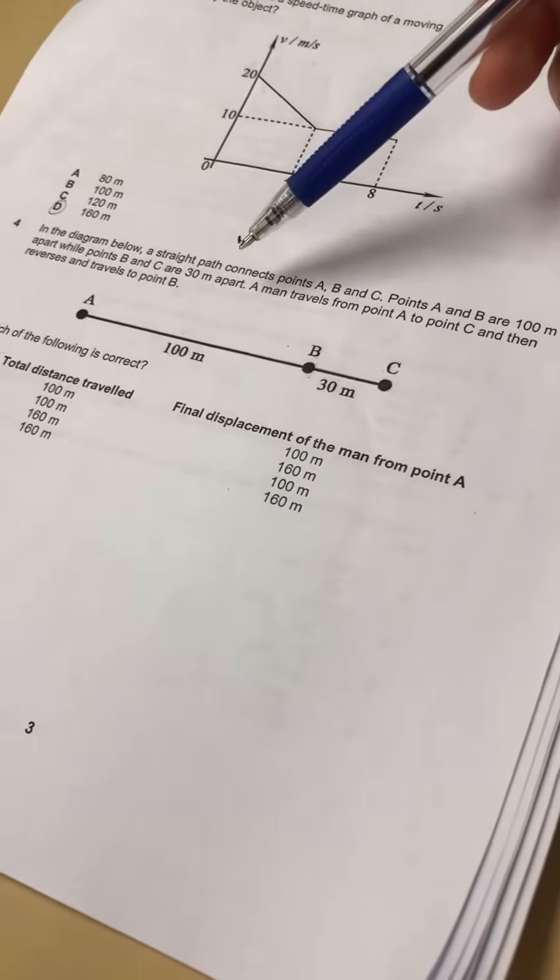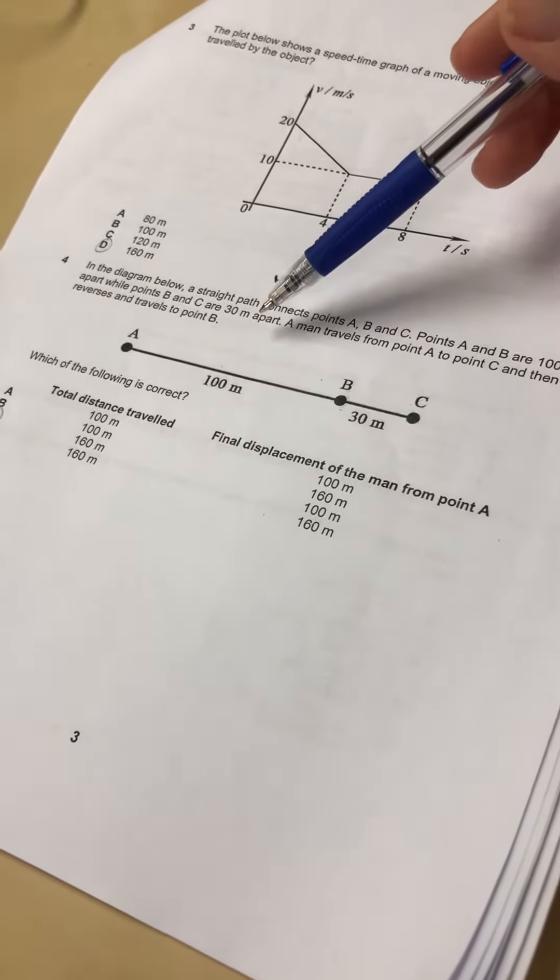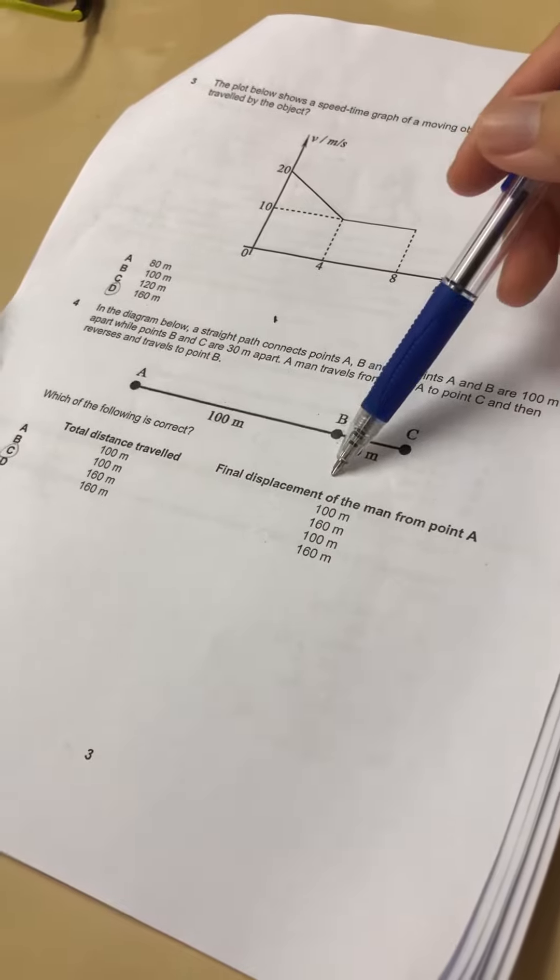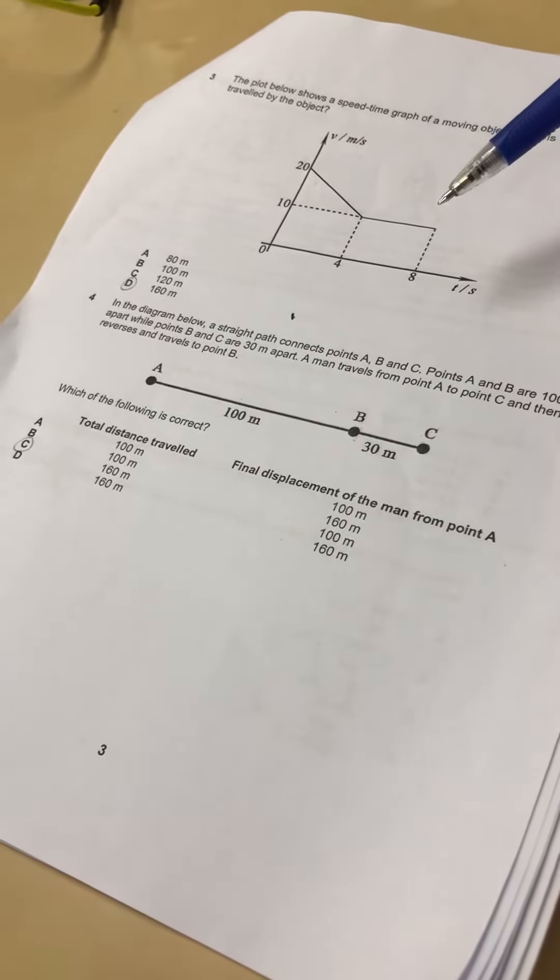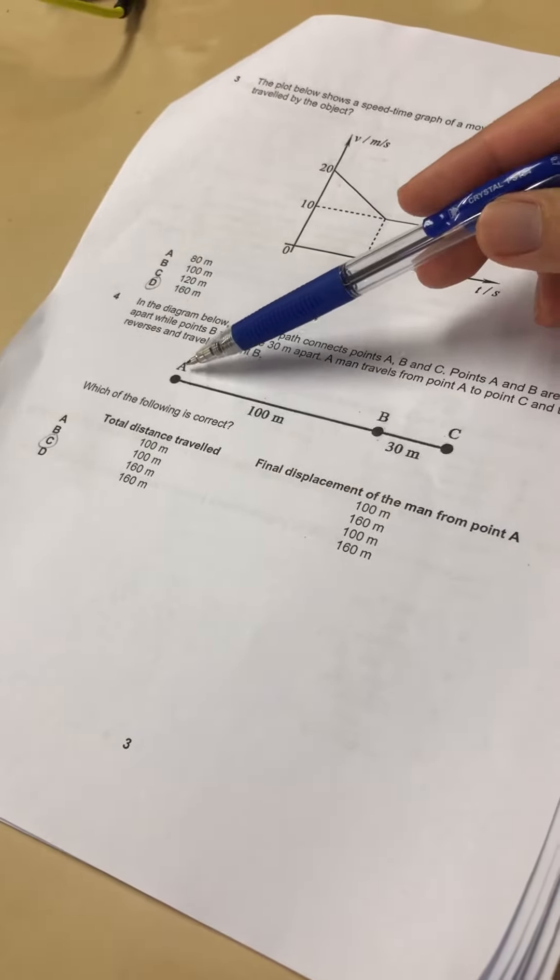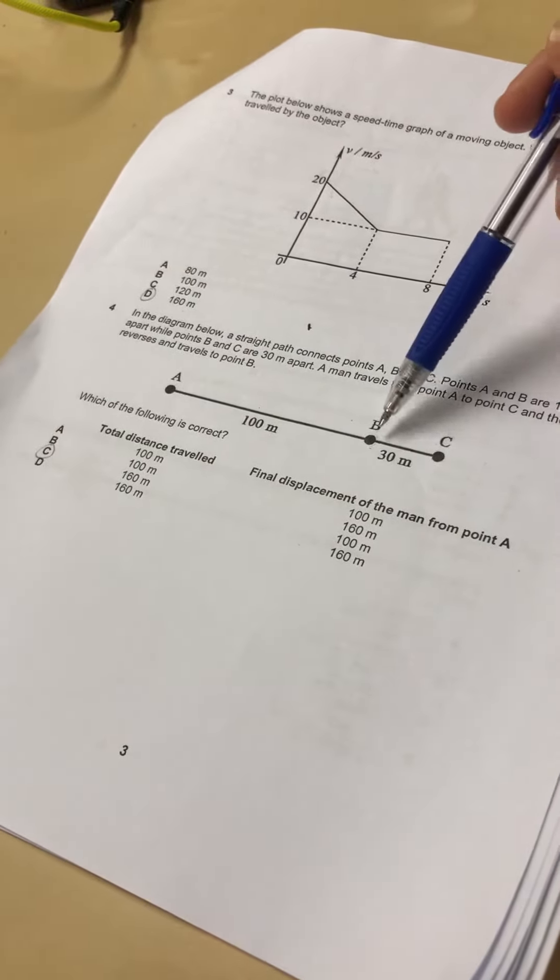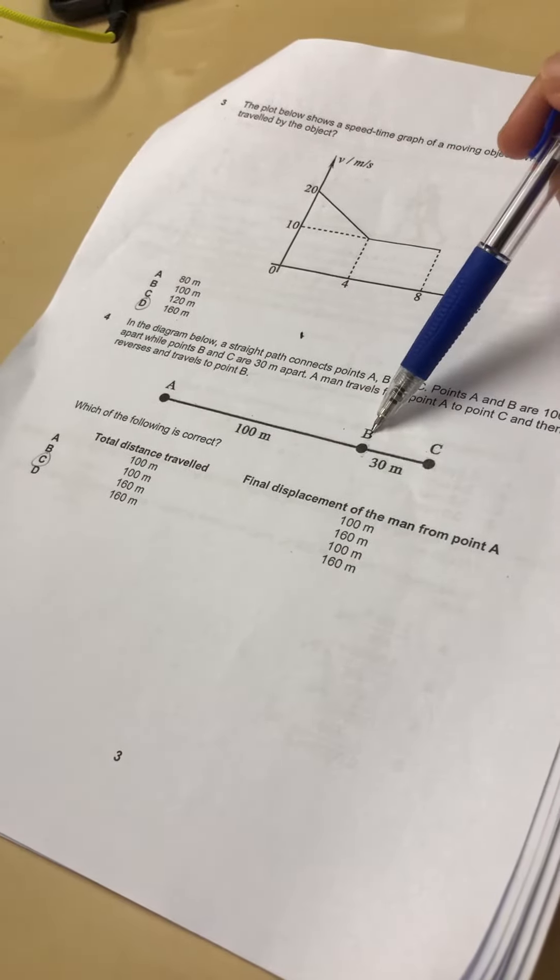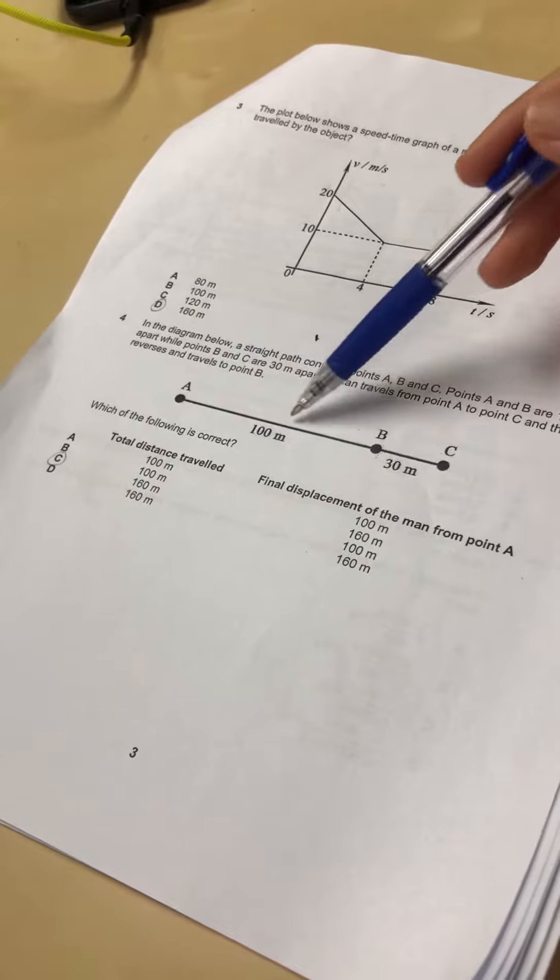Alright, so next one. The question is about the difference between distance traveled and displacement. So what is the difference between distance traveled and displacement? The difference is this: this one traveled from A to C back to B. So A to C is 130, then back to B is 30, so the fellow traveled 160 meters.